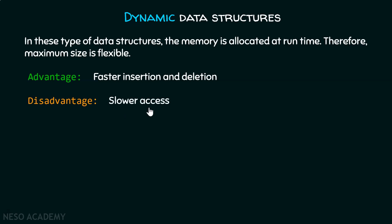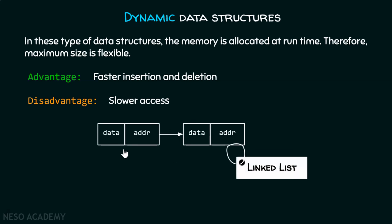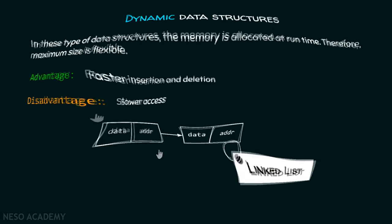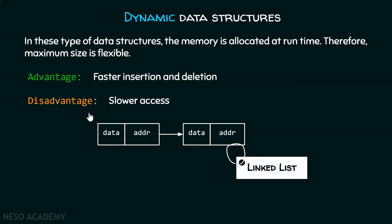You can clearly see that there is nothing like one data structure being better than the other — the advantage of one is the disadvantage of the other. The choice of data structure purely depends upon the user's requirement. Linked list is the best example of a dynamic data structure. We will discuss how linked lists are created and their advantages and disadvantages in subsequent lectures.